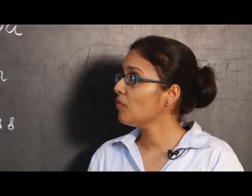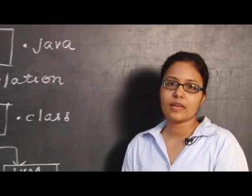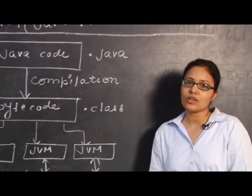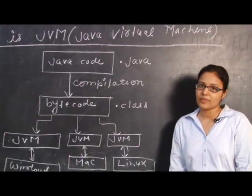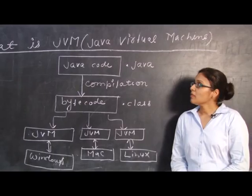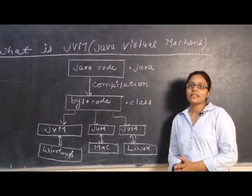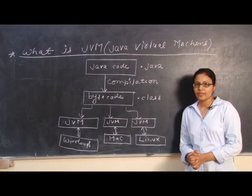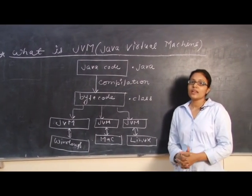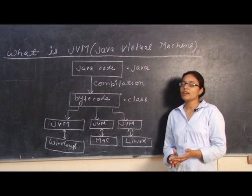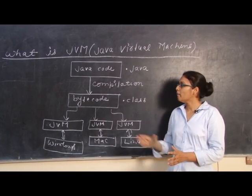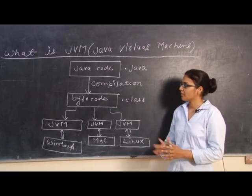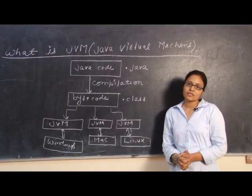The full form of JVM is Java Virtual Machine. JVM provides the runtime environment to Java. It means it is used to interpret the compiled byte code.